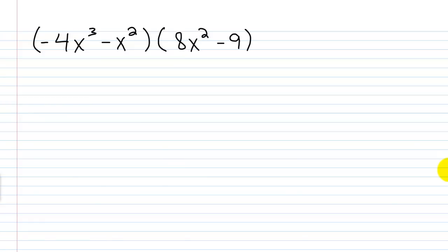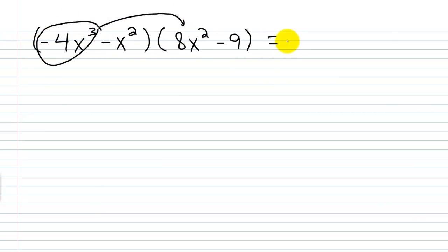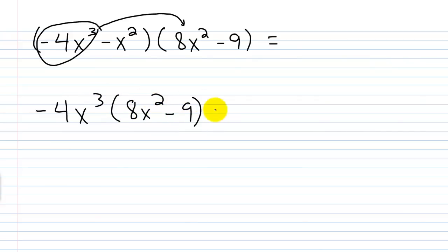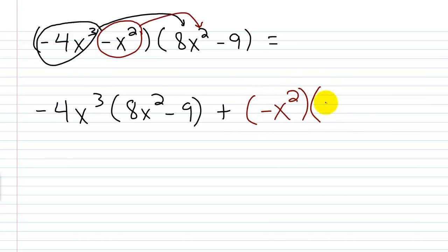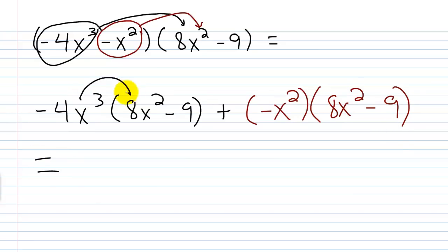Here again we have two binomials that we're multiplying together. Make sure you take each term from the first binomial and multiply by each term of the second binomial. So I'll take the first term and multiply it by the second polynomial: negative 4x cubed times 8x squared minus 9. Then the second term from the first polynomial multiplied by the second polynomial: plus negative x squared times 8x squared minus 9. So let's work through this — negative 4x cubed times 8x squared.